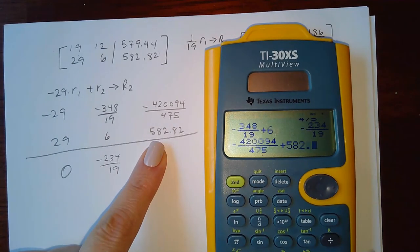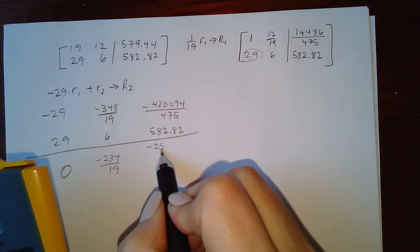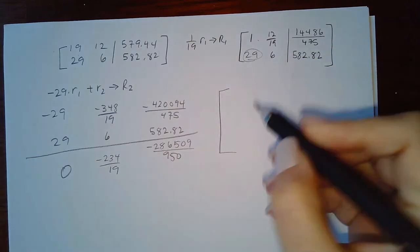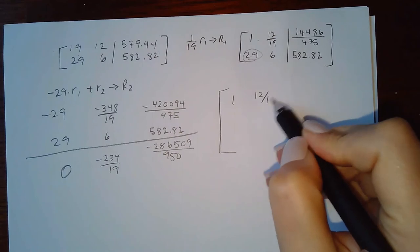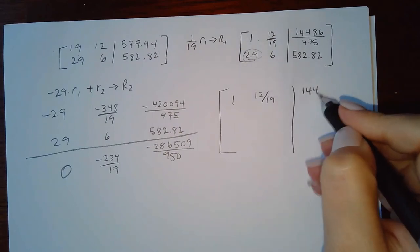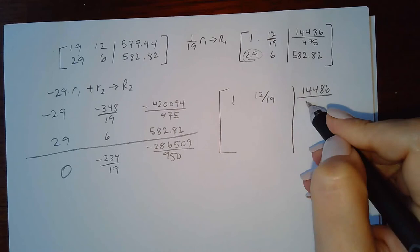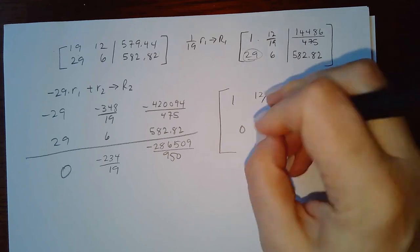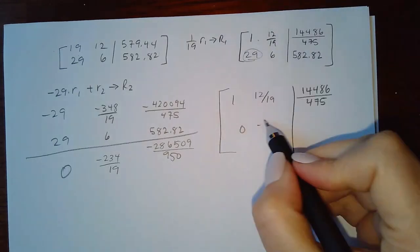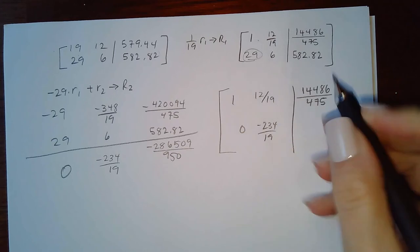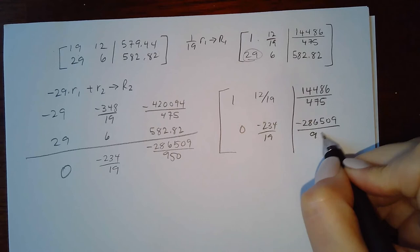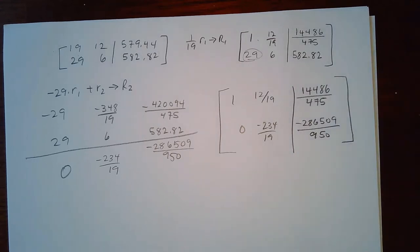After computing, I get the constant for row 2 as approximately negative 286509 over 950. The key warning: be very careful to write everything down correctly — mistakes usually happen when rewriting numbers, not from bad math. With all these numbers, it's easy to copy something incorrectly.